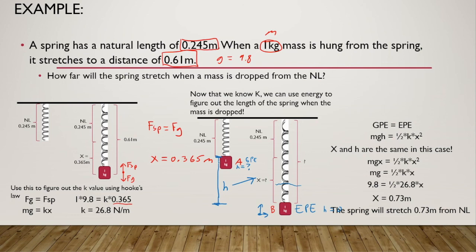The reason our height and stretch distance are the same is because we're setting our artificial ground to be the bottom — the lowest point — to say that there's no height there.